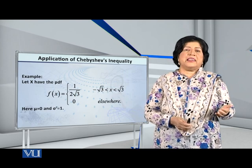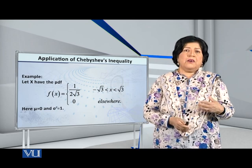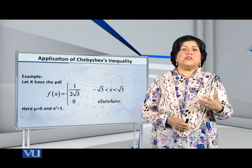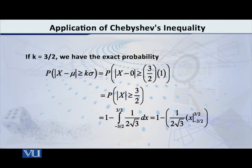The condition is that the mean and variance exist. Now suppose that we put k equal to 3/2. That can be any positive real number, but let us choose it as 3/2, meaning 1 and a half.